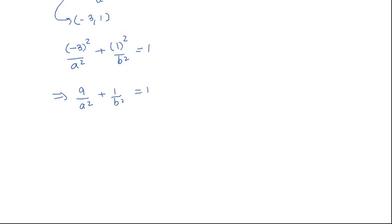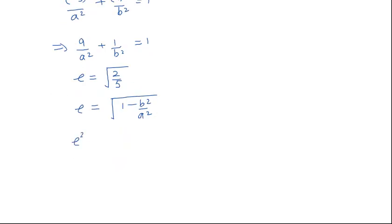The other information given is that the eccentricity is √(2/5). We know the eccentricity of an ellipse is given by e = √(1 - b²/a²). So e² = 1 - b²/a².